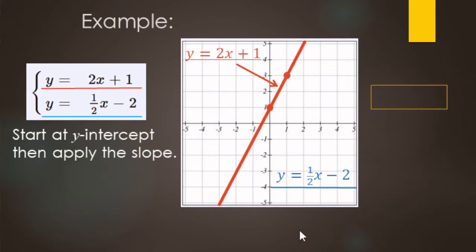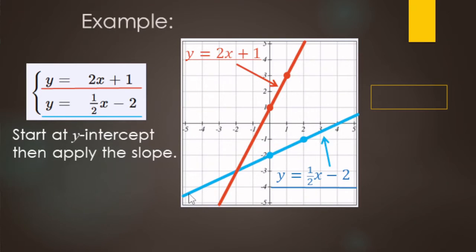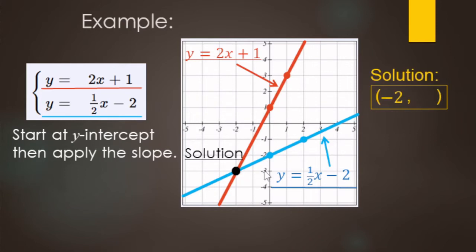Now for the bottom equation: the y-intercept is negative 2 and the slope is one-half, so rise over run is up one, right two. Draw that line. The solution that makes both equations true is where they intersect — that's the ordered pair negative two comma negative three.